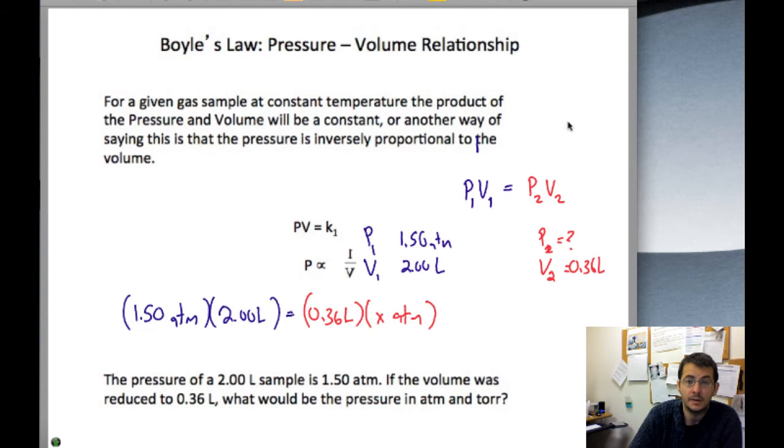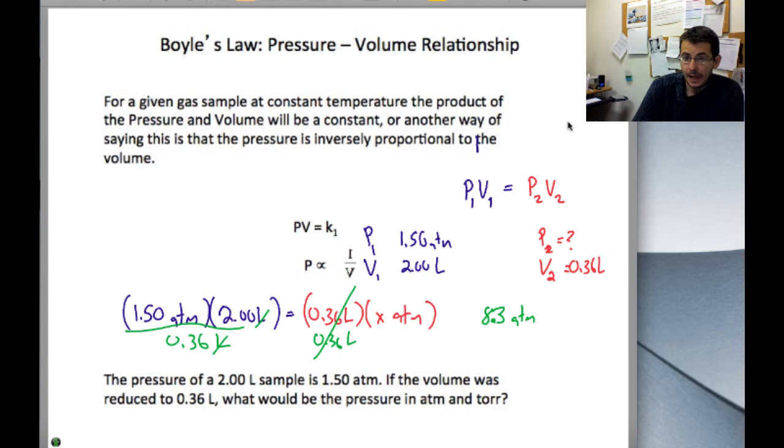So, plugging these values in, you get the following expression. A little creative rearrangement and some judicious multiplication says that we would expect the final pressure to be 8.33 atmospheres. So by drastically reducing the volume from 2 liters to 0.36 liters, you would increase the pressure to 8.33 atmospheres.